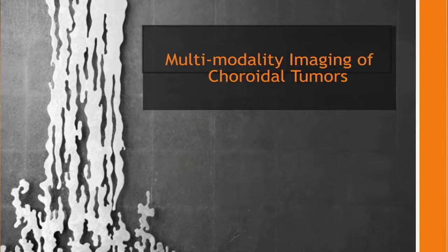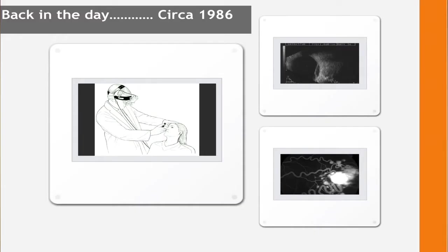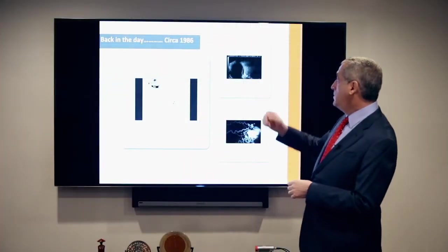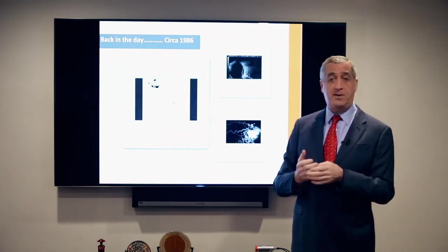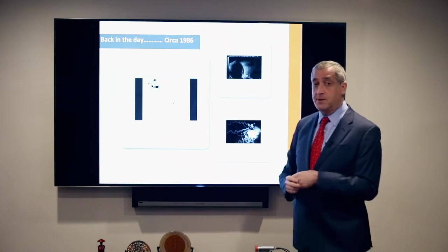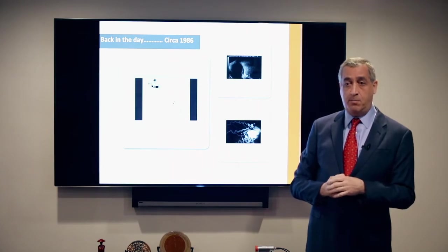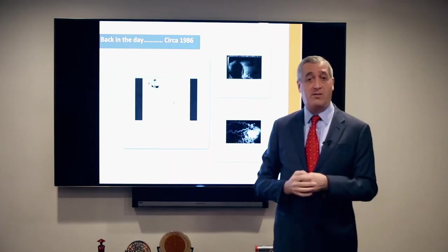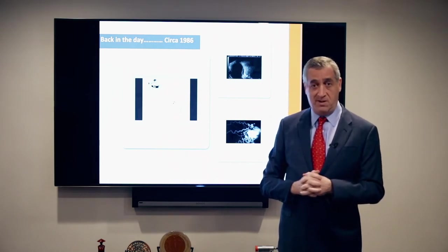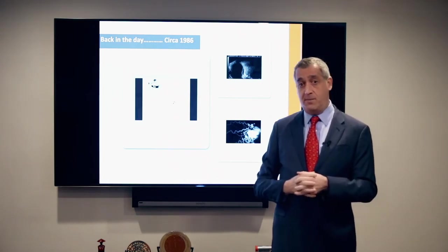As I mentioned, we're going to talk about multimodality imaging of choroidal tumors. Let's look back in the day. I've been doing ophthalmic oncology and practicing over 30 years. Back in 1986, if I saw a patient with an intraocular tumor, I could look in with indirect ophthalmoscopy through the dilated pupil, do an ultrasound with A-scan, and do an angiogram — but I'd have to wait three to five days for the Kodachromes to be developed.